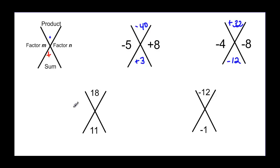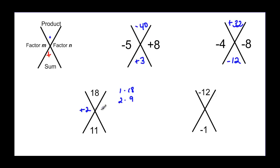Now let's go the other way — we want to find m and n. So we need factors of 18 that add up to 11. You could start listing factors: 1 and 18 add to 19, that doesn't work. But 2 times 9 is 18 and 2 plus 9 gives 11. So our factors are positive 2 and positive 9.